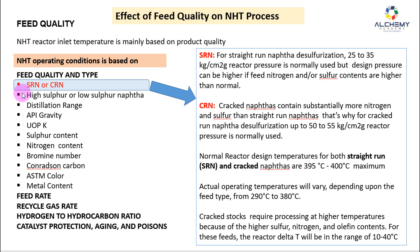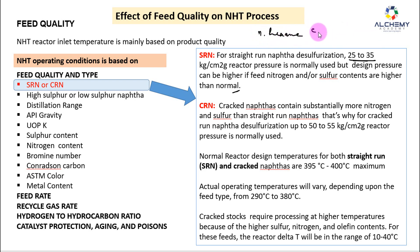For SRN — straight run naphtha — desulfurization uses a reactor pressure of around 25 to 35 kg/cm²; the design pressure can be higher if nitrogen or sulfur contents are higher than normal. The major component of naphtha is C5, C6, and C7, with the primary component being N-hexane, a six-carbon single chain. For this type of feed the NHT unit normal pressure is kept around 25 to 35 kg/cm², and desulfurization will start at a lower pressure.